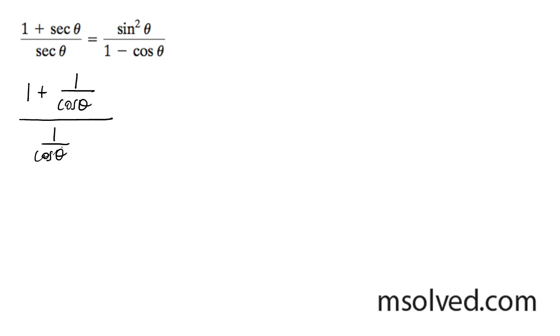What we're going to do here is multiply through by cosine theta, times cosine theta over cosine theta. And what we'll have is cosine theta plus 1 over 1.